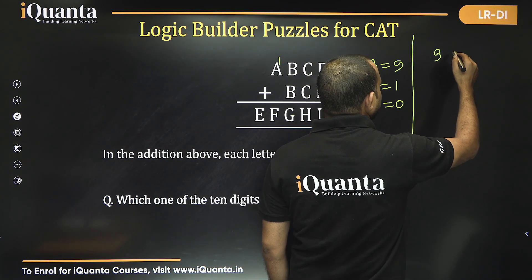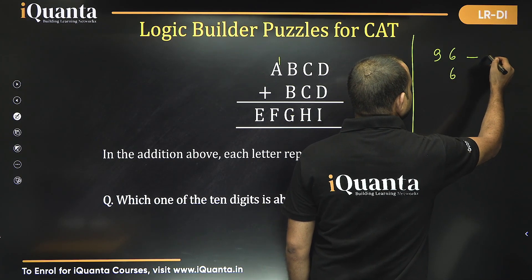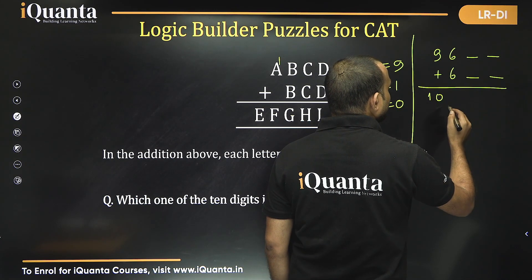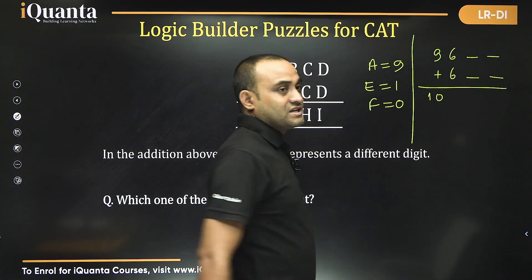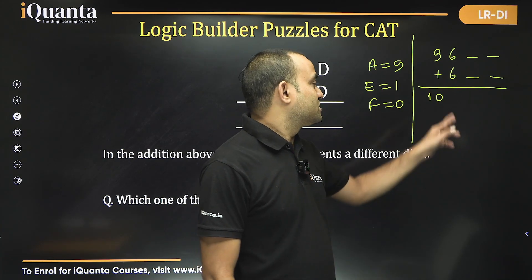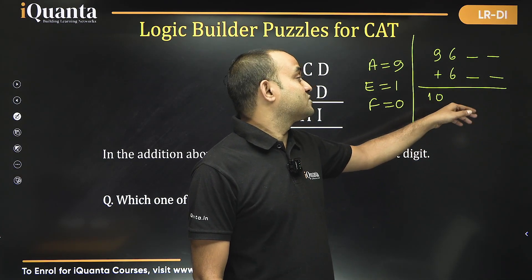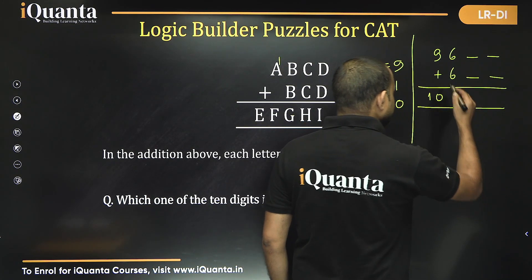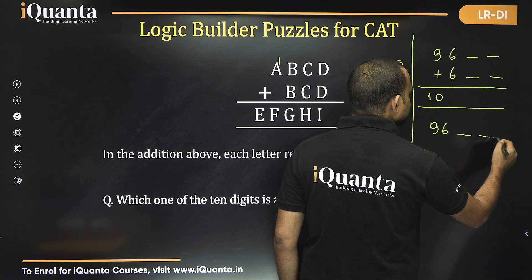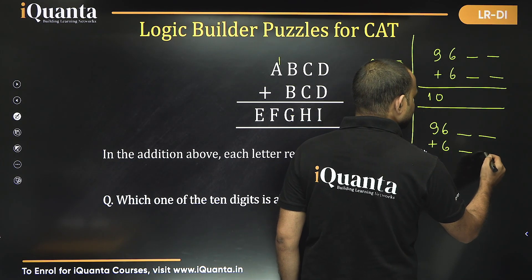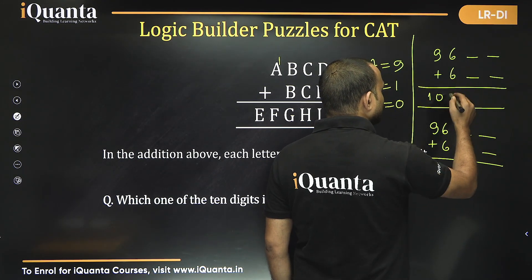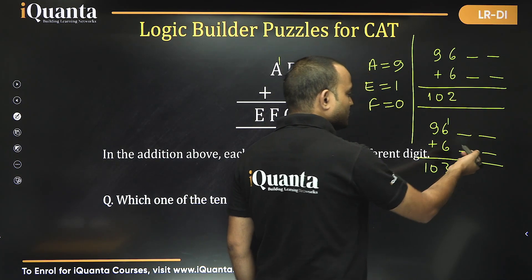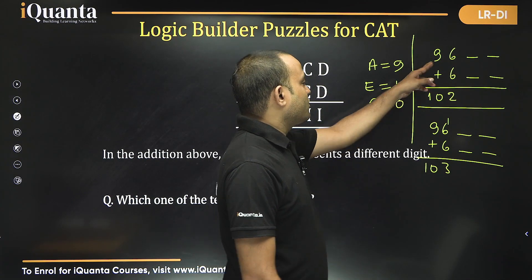Taking B equal to 6, with the layout 9, 6, 6, C, D plus 6, C, D giving result 1, 0. Now 6+6=12, so this digit could be 2 with one carry-forward, or if there is already a carry-forward from the previous column, it could be 3. So we consider two sub-cases: this digit is 2 (no incoming carry) or 3 (one incoming carry). If this digit is 2, there is no carry-forward, meaning C+C must be less than 10.